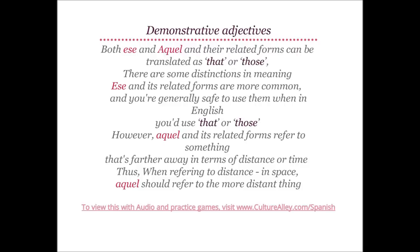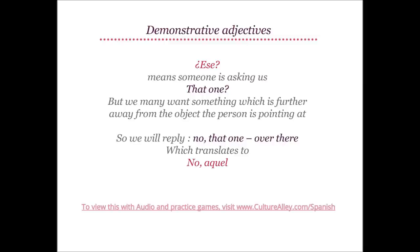Although both ese and aquel and their related forms can be translated as 'that' or 'those,' there are some distinctions in meaning. Ese and its related forms are more common and generally safe to use when in English you'd say 'that' or 'those.' However, aquel and its related forms refer to something farther away in terms of distance or time. When referring to something further away in space, aquel should refer to the more distant thing — for example, replying 'no, that one over there' translates to no, aquel.